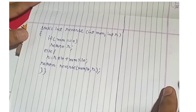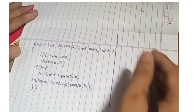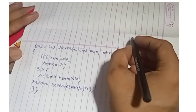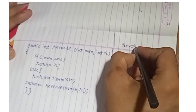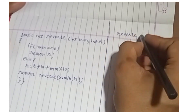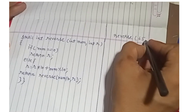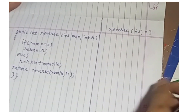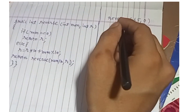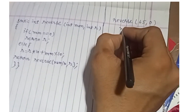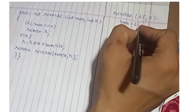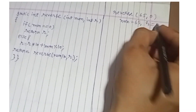Now let's see the dry run of the code. Suppose we call the method as reverse(65, 0). When it is first called, the value of num is 65 and R is 0. The condition checks if num equals 0 — 65 is not equal to 0, so the condition is false.